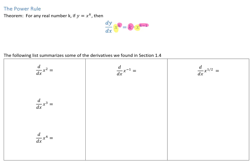For our first example, taking the derivative with respect to x of x squared, we pull that 2 down as a coefficient and get 2x to the power of 1. The next one: d/dx of x cubed — the 3 comes down and we get x to the power of 2. Then d/dx of x to the 4th is 4 times x to the 3rd. For negative powers, d/dx of x to the negative 1 becomes negative 1 times x to the power of negative 2.